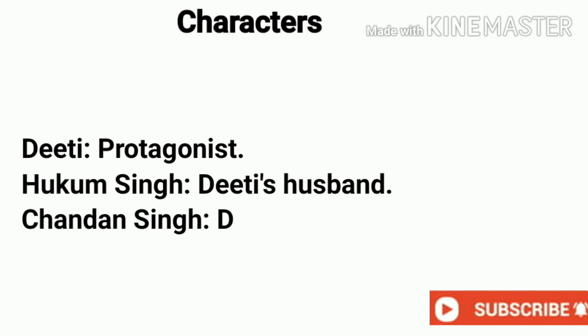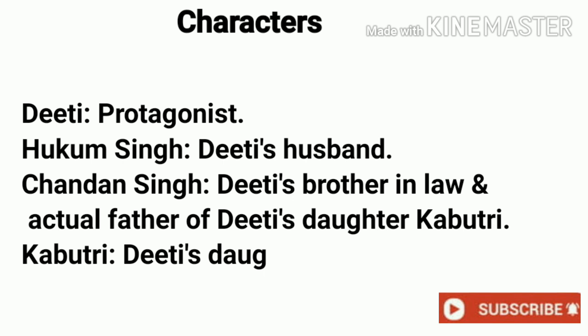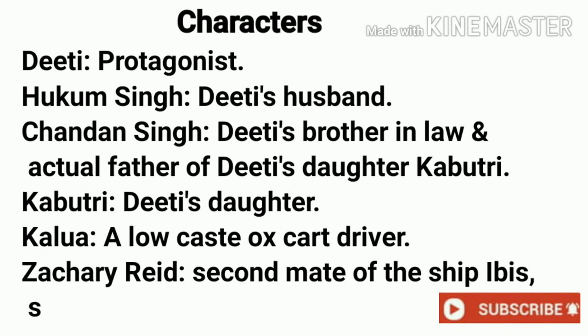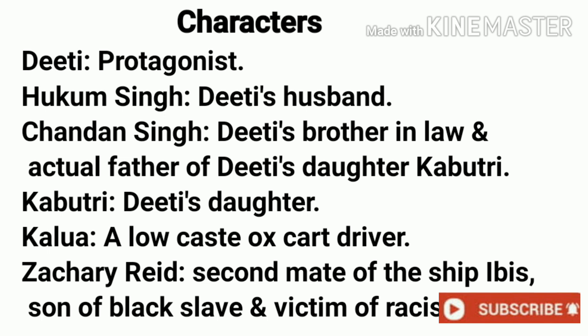Let's have a look at the major characters of the novel. Deeti is the protagonist of the novel. Hukum Singh is Deeti's husband. Chandan Singh is Deeti's brother-in-law and the actual father of Deeti's daughter Kabutri. Kabutri is Deeti's daughter. Kalua is a low-caste ox-cart driver. Zachary Reed is the second mate of the ship Ibis, son of a white American and his black slave, and a victim of racism.